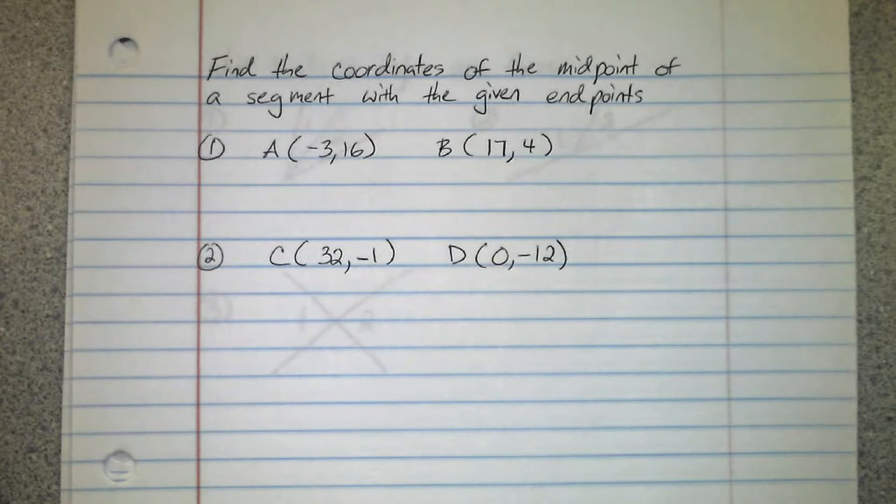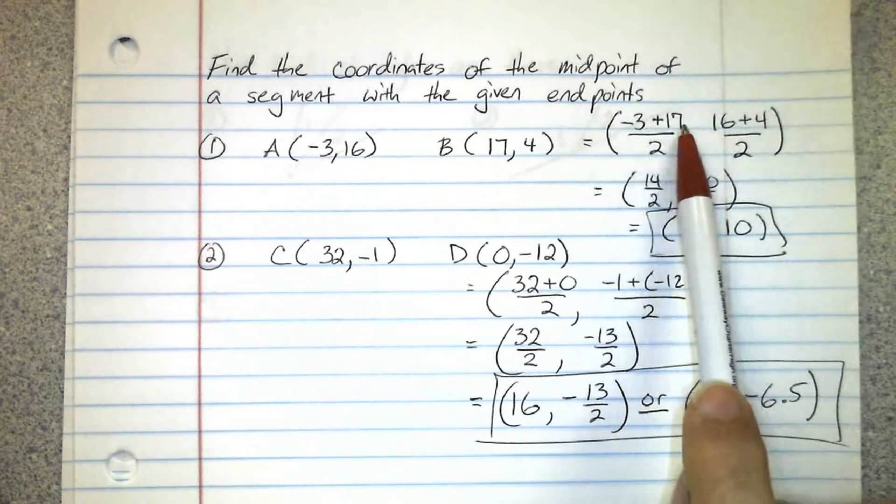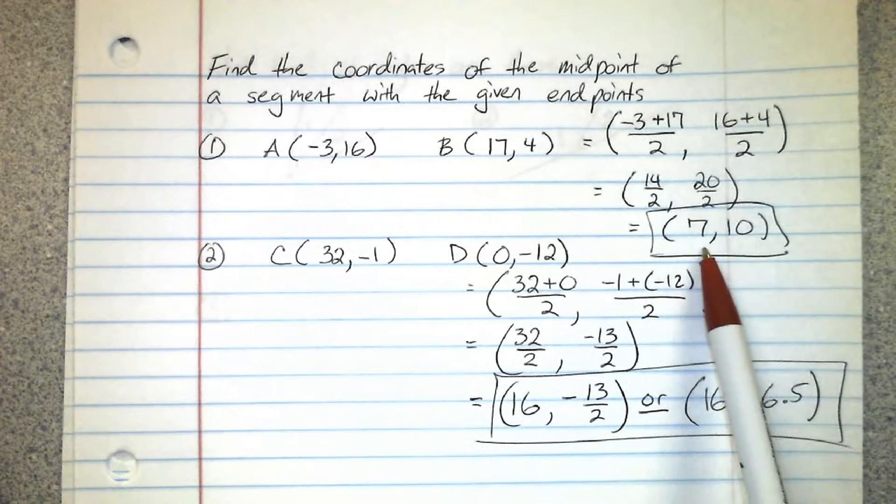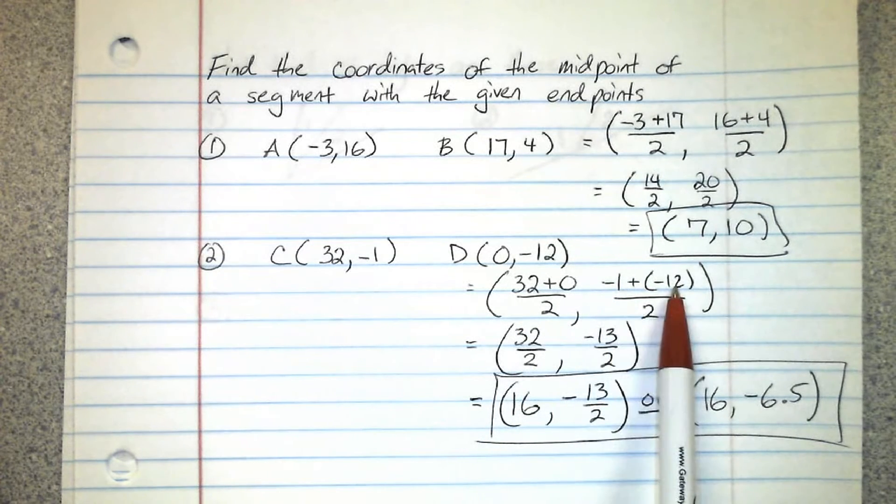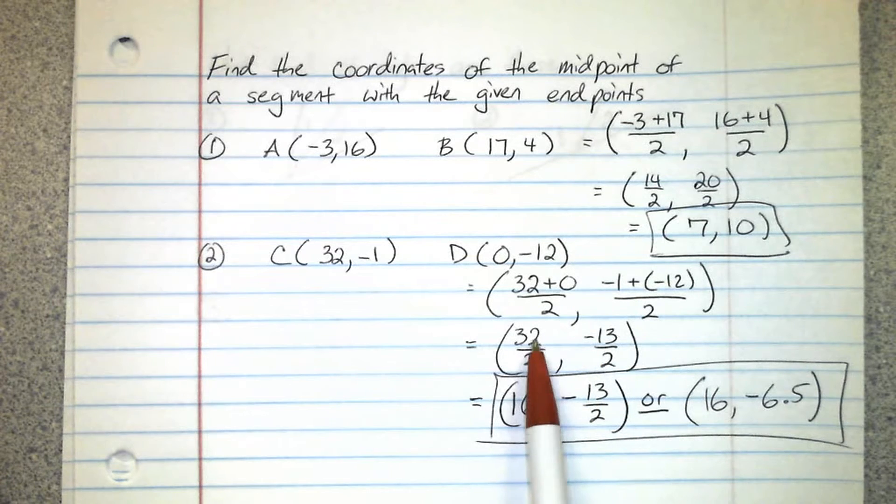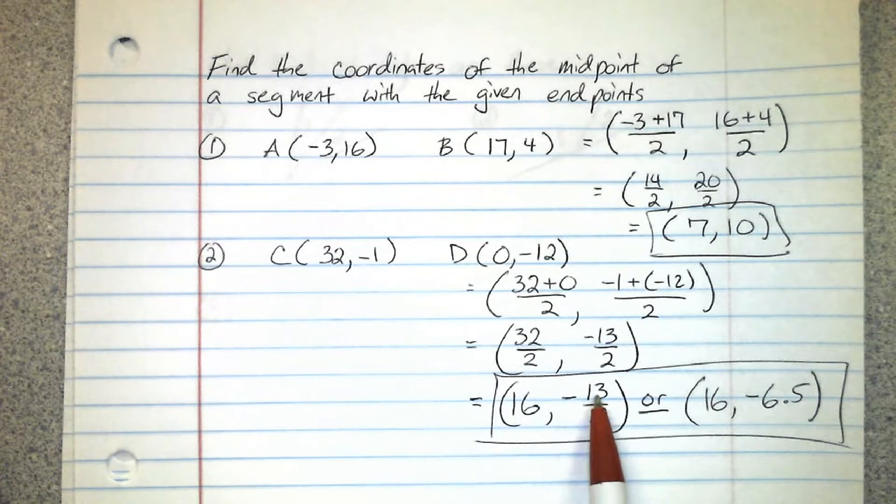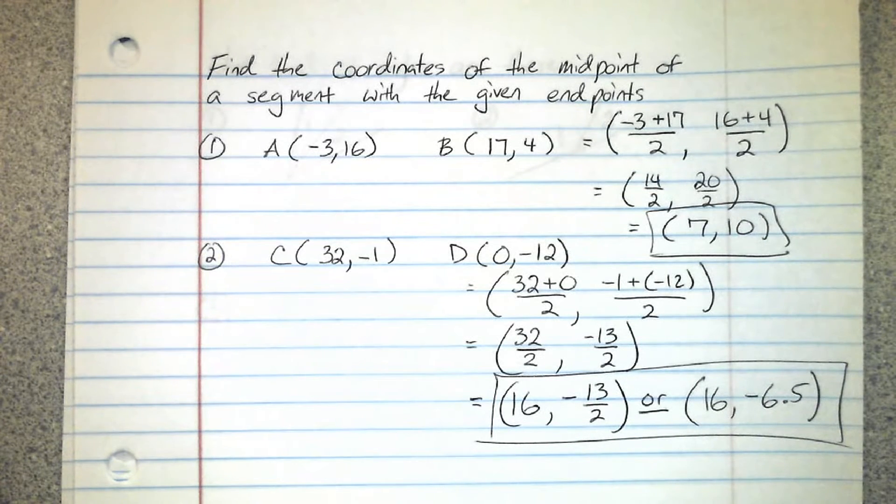Alrighty, go ahead and try to find the midpoint of each of those pairs. So remember for midpoint, you're going to add the two x coordinates and divide by 2, and add the two y coordinates and divide by 2. For the first one you can see 7 comma 10 is the answer. Now for this one, don't forget a negative plus a negative is still going to remain a negative. The negative 13 divided by 2, you have to simplify this fraction. Since it becomes a decimal, I'll take it either way. You can either leave it as negative 13 over 2, or you could write the answer like this: negative 16 comma negative 6.5.